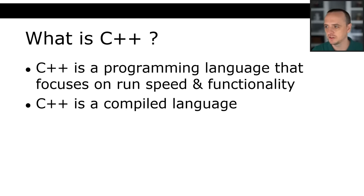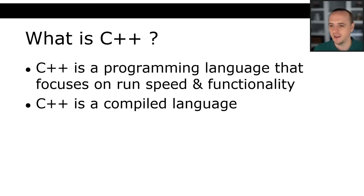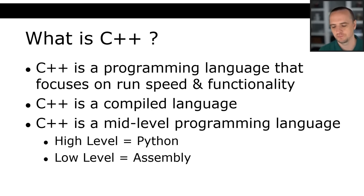C++ is a compiled language. There are languages that are not compiled — Python is an interpreted language, meaning there's an interpreter that runs in the background and looks at your code line by line and will only throw runtime errors. C++ is a compiled language like Java, and so you're going to type a command that will compile your code and you will get compiler errors. Just know that it's a compiled language.